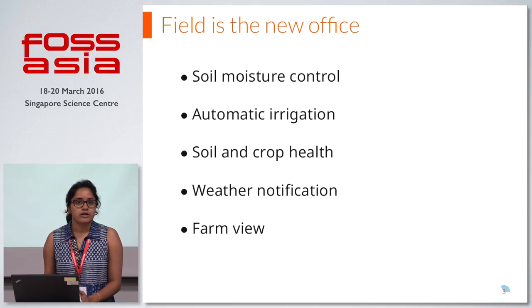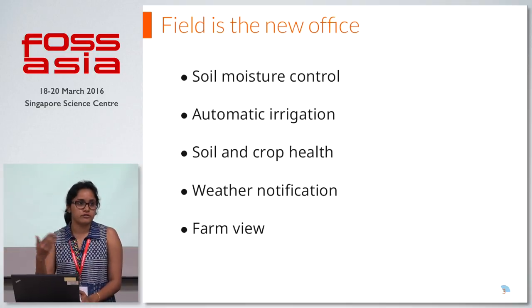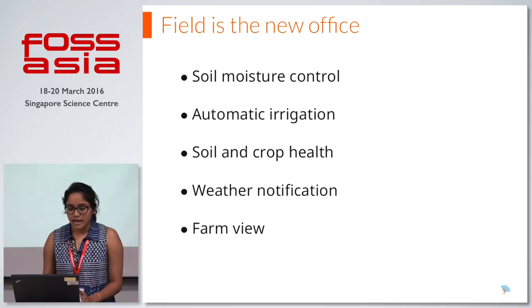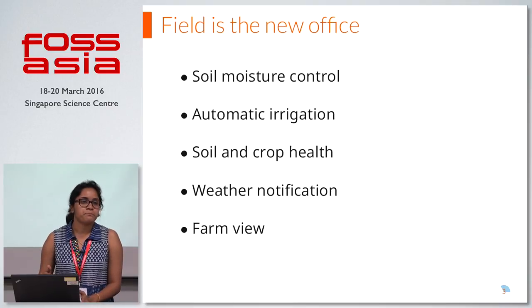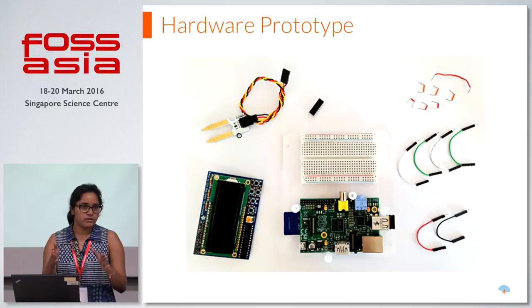Weather notification — it will predict the climatic conditions beforehand and give notifications to the farmer. And farm view, where you can view the farm or the map of the farm and check out what is happening there.